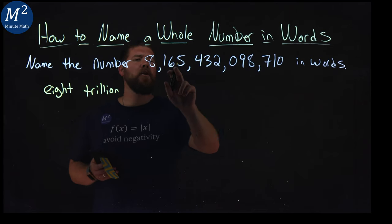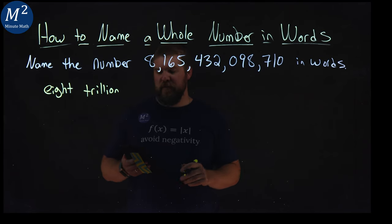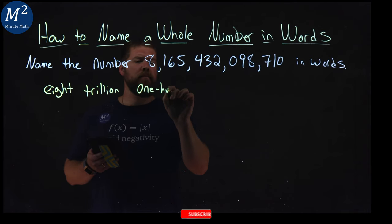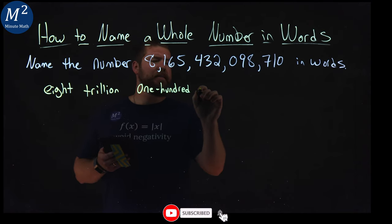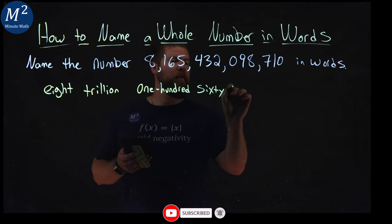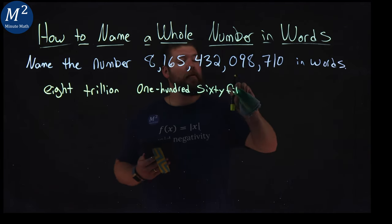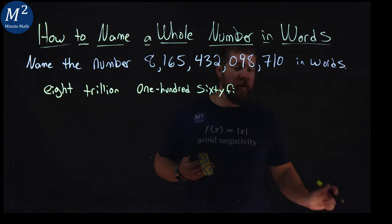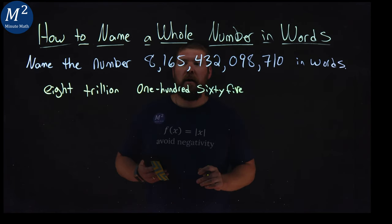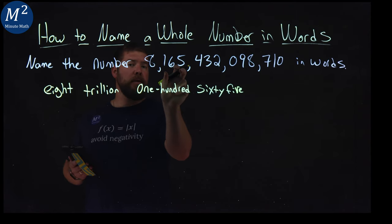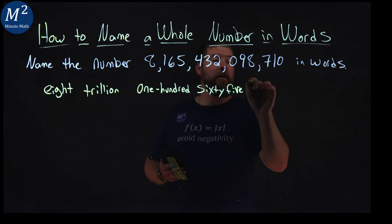And then what's next? We have 165. I almost wrote 5 with a V. But like I said, that was trillion. This is the billions here. So 165 billion.